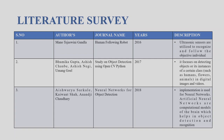The second journal is 'Study on Object Detection using OpenCV Python' by Bhumika Gupta, Asish Chabe, and Asish Nagi Humagol, in 2017. It focuses on detecting objects or instances of certain classes such as humans, flowers, and animals in digital images and videos.